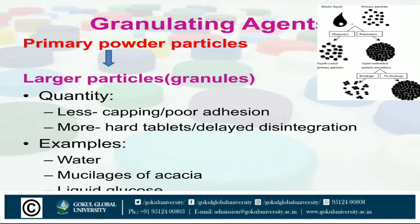Moving on to granulating agents. These agents convert primary powder particles into larger particles or granules. They are mainly used while preparing hard tablets in order to produce harder tablets and delay disintegration. Some examples are water, mucilages of acacia and liquid glucose.